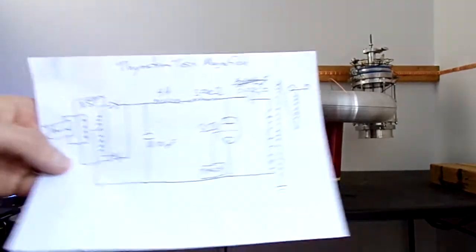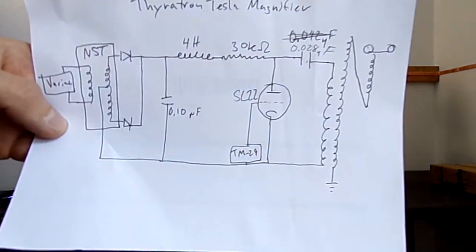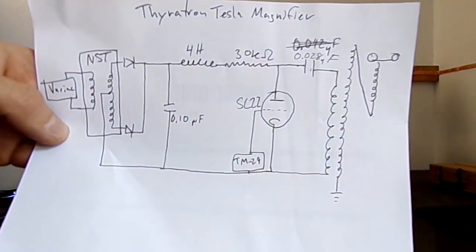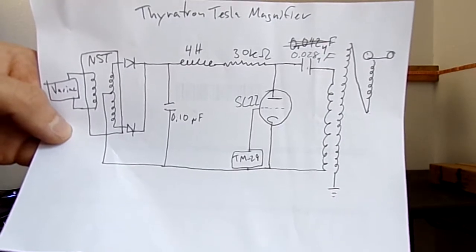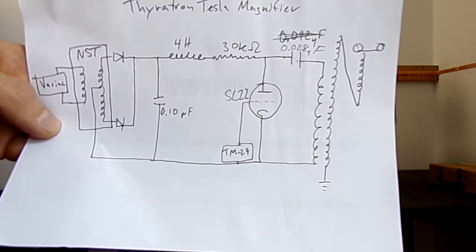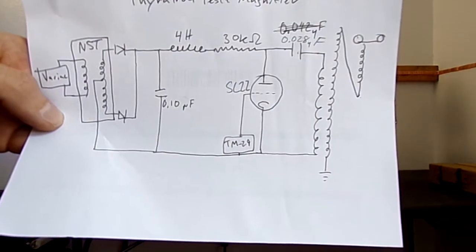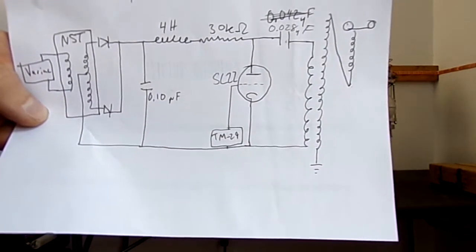And then here I've got our schematic. We've got a Variac controlling a neon sign transformer, half bridge rectified into a 0.1 microfarad storage capacitor.